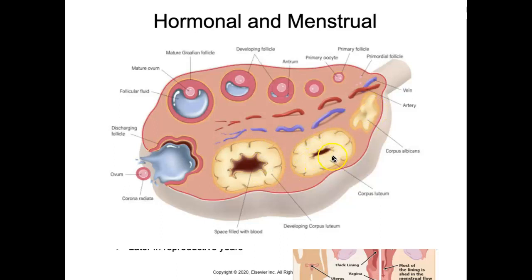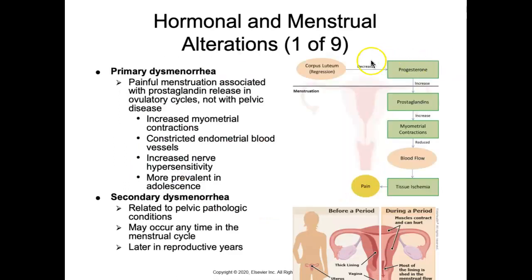The corpus luteum will persist for three months if the egg is fertilized, but if unfertilized it regresses and becomes the corpus albicans. As that regression takes place, we decrease the amount of progesterone, which then increases the amount of prostaglandins. That prostaglandin release results in increased myometrial contractions.